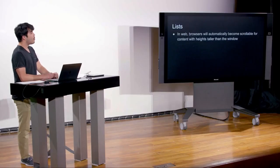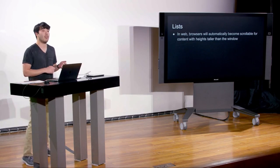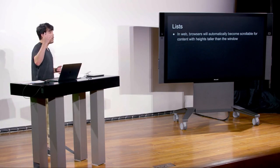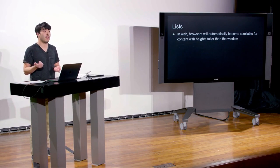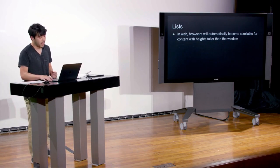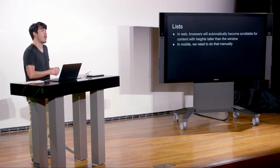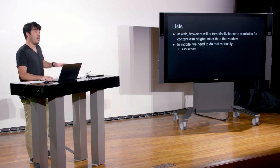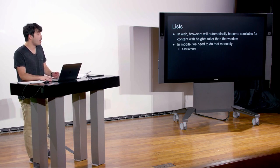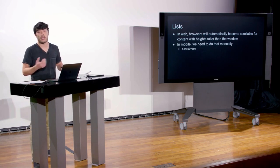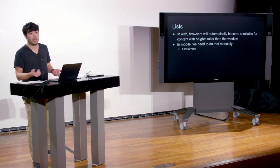In web, browsers will automatically become scrollable if the content is greater than the window height — the browser takes care of scrolling for you. Unfortunately, this is not true in React Native. For mobile, we actually have to do that manually. There are a few different components that allow you to do that, the most simple of which is called a ScrollView — it's just like a normal view, except you have the ability to scroll.